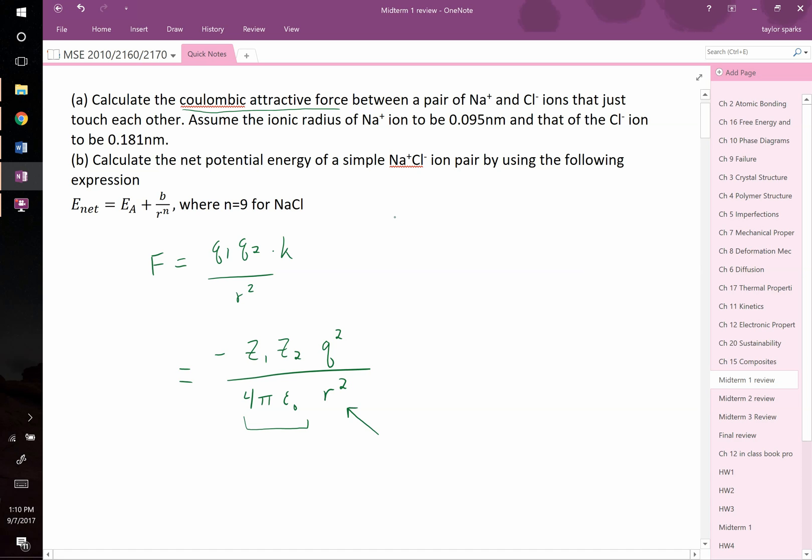We're told that the radius of the sodium ion is equal to 0.095 nanometers, whereas the radius of the chlorine ion is equal to 0.181 nanometers. And we know that the bond distance R naught is going to be equal to the radius of sodium plus the radius of the chlorine, because we're told in the problem that it's when the ions just touch one another.